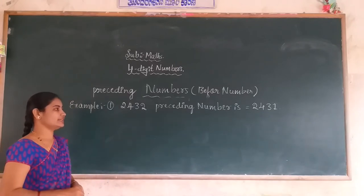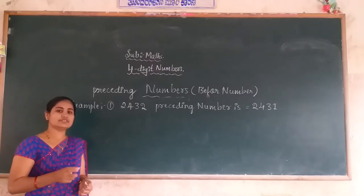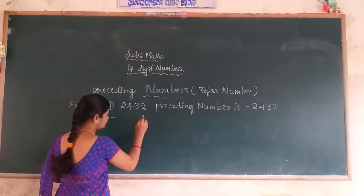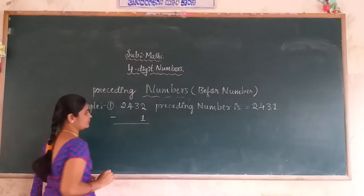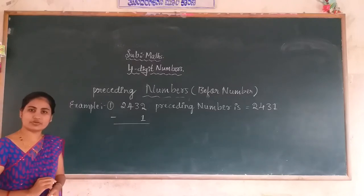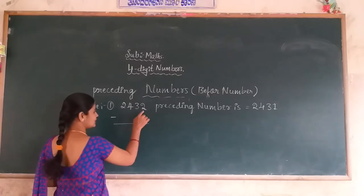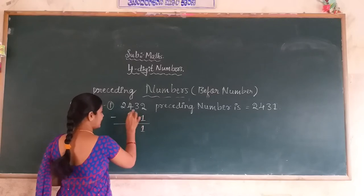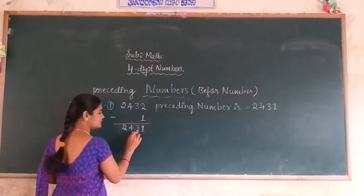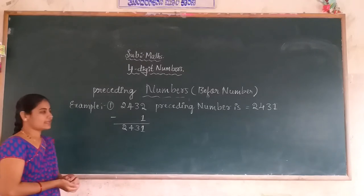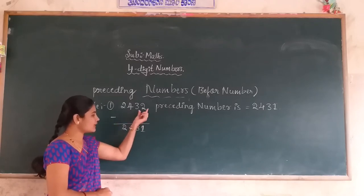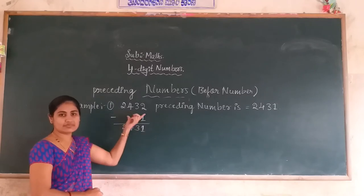This is the method for finding the preceding number. Another method is: you subtract 1 from the unit place. You can subtract 1 from the units digit to easily find the preceding number of the given four-digit number. 2 minus 1 is 1. The remaining three digits stay the same — there is no number to subtract from them. Therefore 2431 is the preceding number.